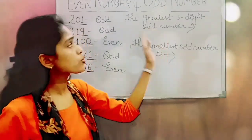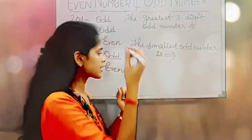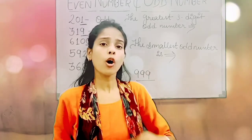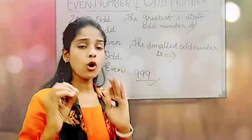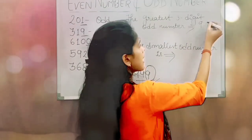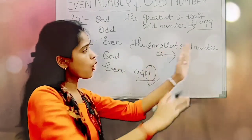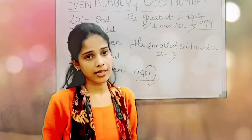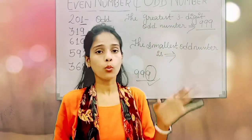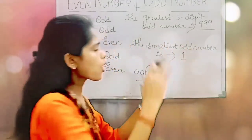Now let's look at a few more questions. What is the greatest three-digit odd number? The greatest three-digit odd number is nine hundred and ninety-nine — because ones ki place pe nine likha hai, so it is also odd. So nine hundred and ninety-nine is the greatest three-digit odd number. And if I ask you: what is the smallest odd number? The number which ends with 1, 3, 5, 7, or 9 — so the smallest such number is one. Smallest odd number is one.